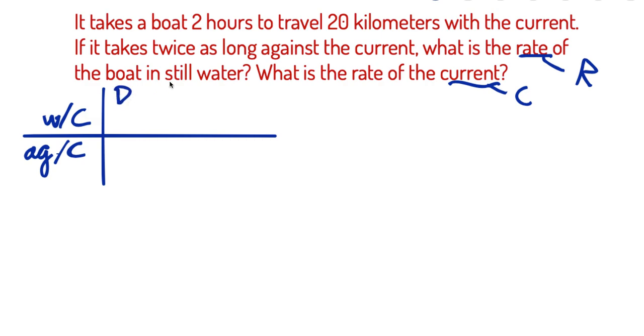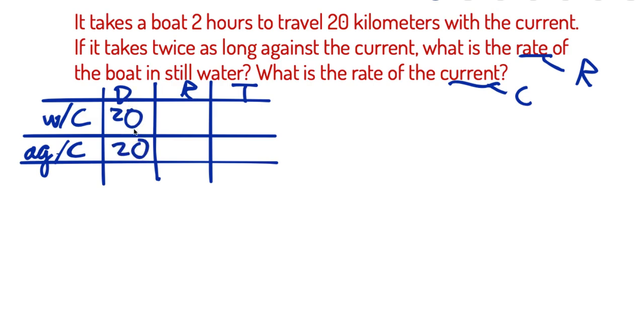We're going to do distance equals rate times time. You guys already know the drill here. Distance equals rate times time, the dirty equation. And then with the current, we're going 20 kilometers each way. So that's pretty cool. We've got 20 for D both ways.